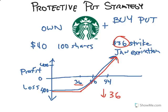That's how people use puts to protect their portfolio. You'll notice this line isn't exactly right on the $40 because the put probably cost a dollar or two. So you do have to pay for the put, which of course takes away from your profit a little bit. But this is a great strategy to protect your downside and still have unlimited upside minus the cost of the put.